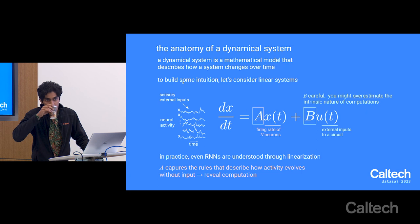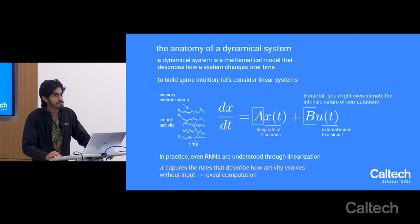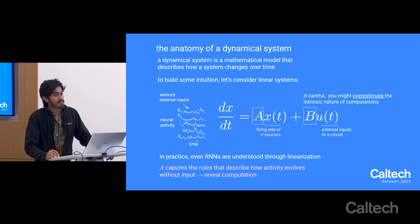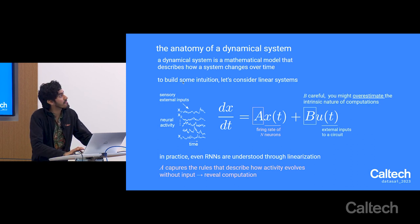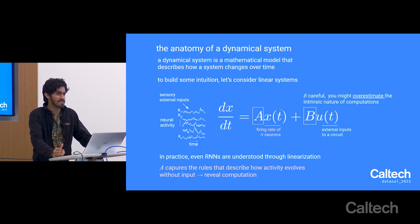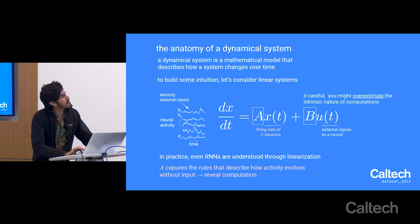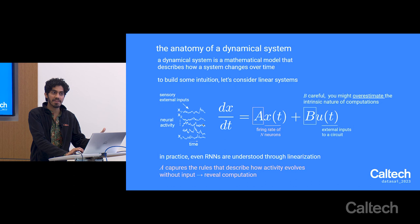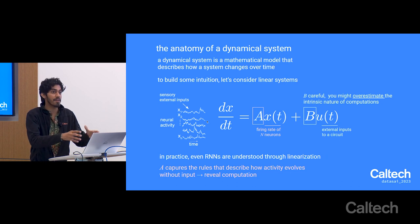There's a question about whether you can reformulate these models so that X exists in a different kind of latent space, separate from neural activity. You can—you can have both X and inputs existing in different latent spaces, and we'll touch on those models at the end. In this formulation, U is capturing anything extrinsic to the circuit, whether behavior, feedback from upstream regions, or other external factors that you consider not part of that circuit.